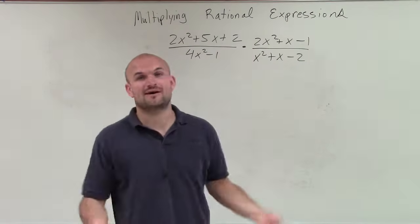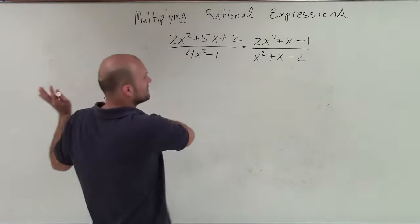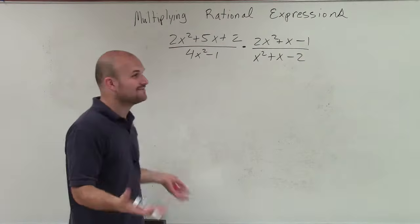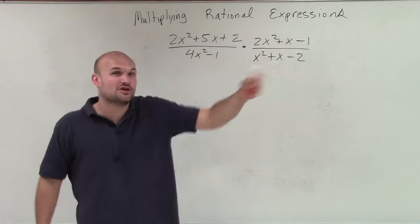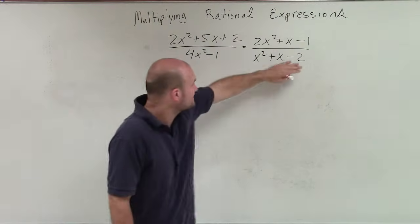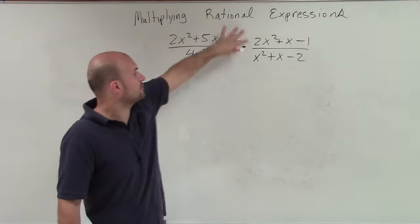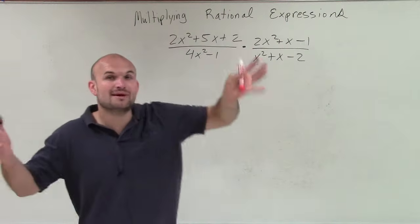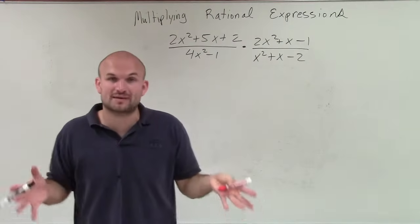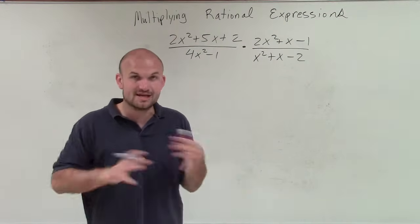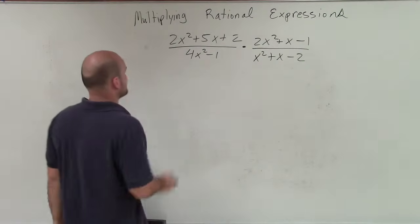So we've got to multiply this, and before we even multiply, we know we have to simplify. Before we multiply everything across, we need to have them simplified. Because right now, there's no terms that we can divide out. Everything is separated by addition, except for between the two rational expressions. So we want to get everything separated by multiplication, at least in their parentheses, so therefore we can divide them out.